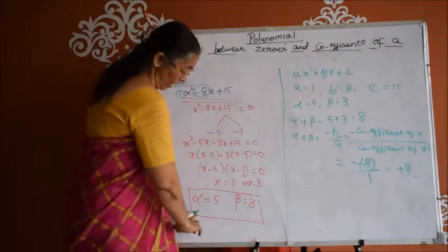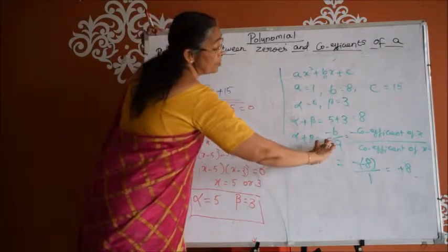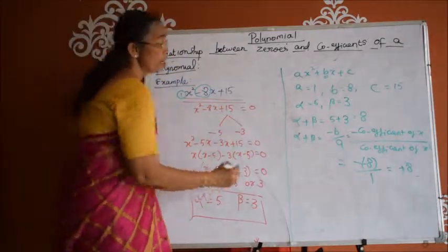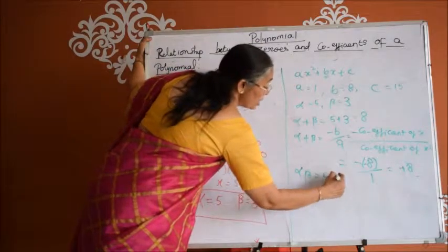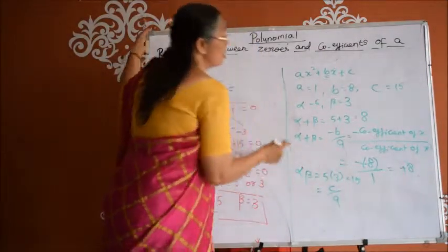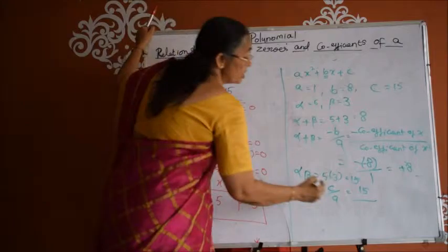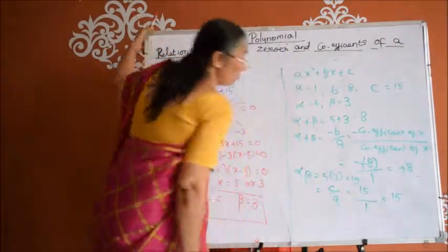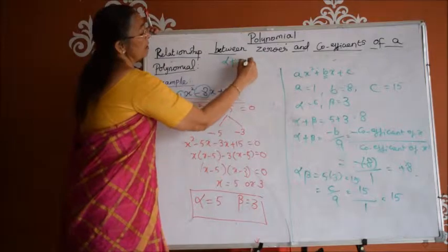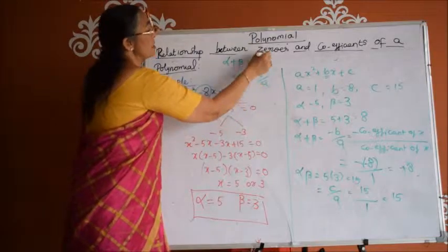So the sum of the zeros after finding the zeros we got is 5 plus 3 equals 8. Directly from the equation we can get the sum of the zeros as minus b by a, which is nothing but minus of minus 8 by 1, which is 8. Similarly, the product of the zeros is 5 times 3 which is 15, and we can observe from the equation this is nothing but c by a. The c value is the constant term 15 and a is the coefficient of x squared which is 1, so c by a is 15. We can conclude that the sum of the zeros of a quadratic polynomial is minus b by a, and the product of the zeros is c by a.